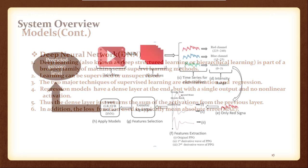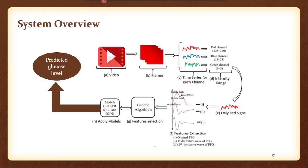And this is the whole system overview. So this is the video that we have collected, then we have extracted the frames, then we have extracted different channels. From those we have chosen our red channel through which we have got our PPG waves, first derivative and second derivative. Then we have performed the feature selection, then we have applied models.